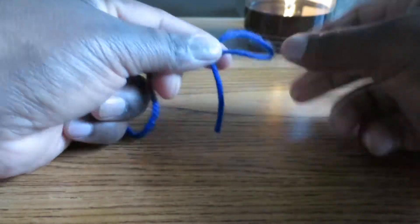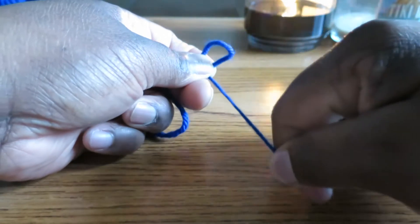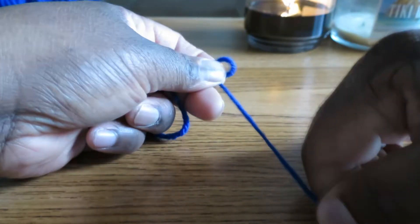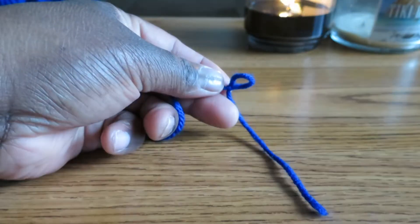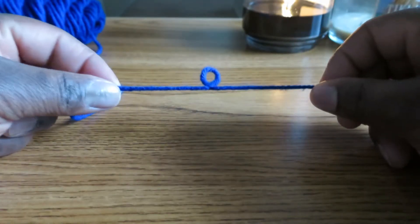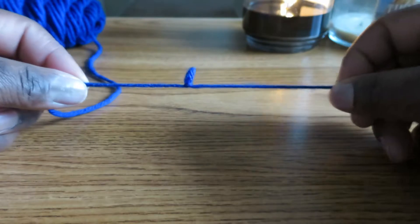Now to adjust your slipknot, you're just going to pull on the tail. Like that. And then at which point we would insert our crochet hook. Let me show you one more time. To undo this, just simply pull. Very cool, right?